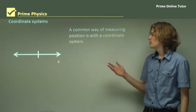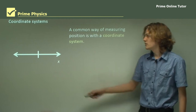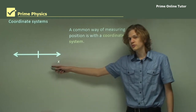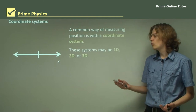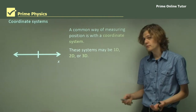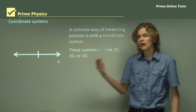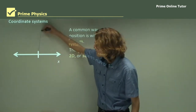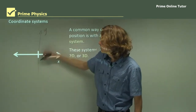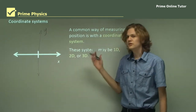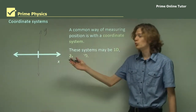A common way of measuring position is with a coordinate system. Here we have a very simple coordinate system in one dimension. These systems can be 1D, 2D, or 3D. If we're measuring a position in 2D then we'll have two axes — an x-axis and a y-axis — so rather than measuring just left or right we can also measure up or down.